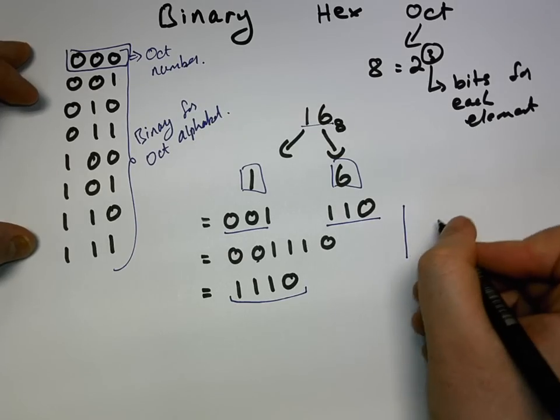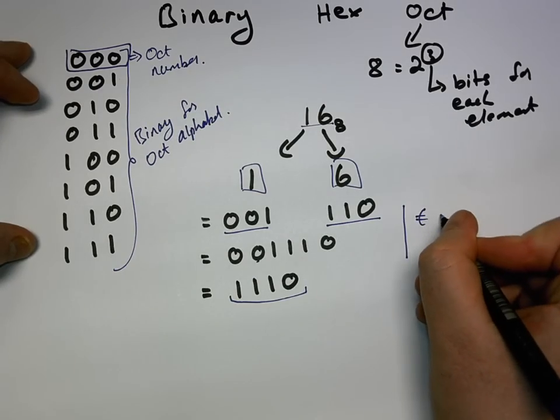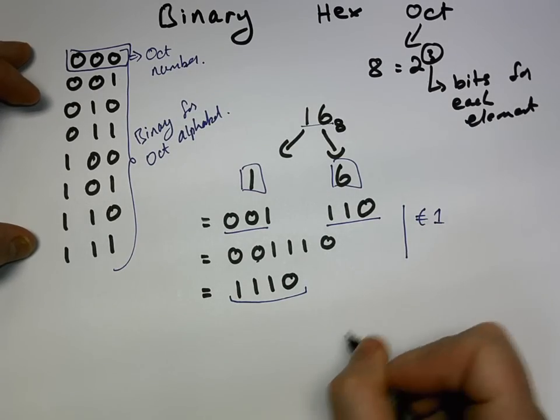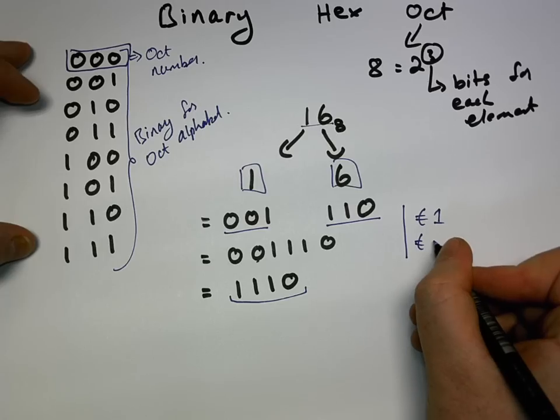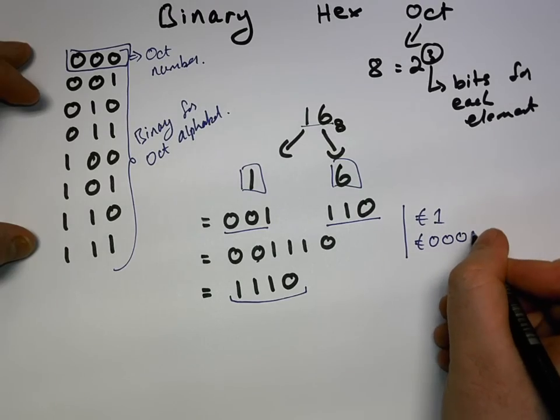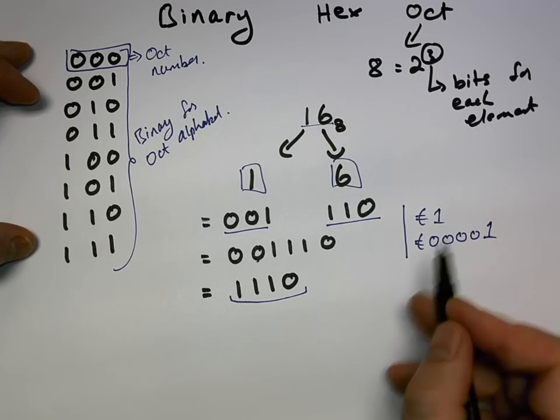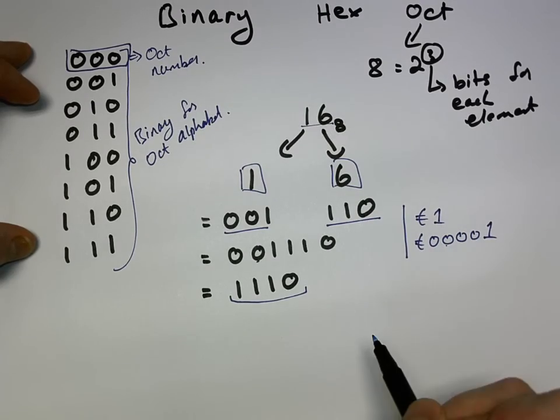What that simply means, if I was to give you one euro, it's the exact same thing as saying you can have zero, zero, zero, zero, one.